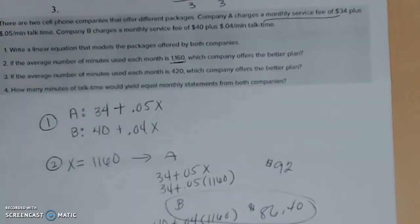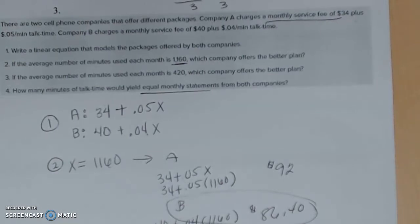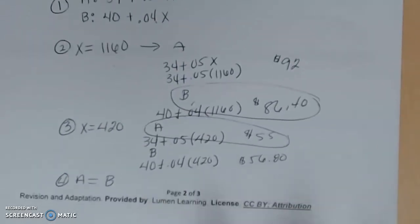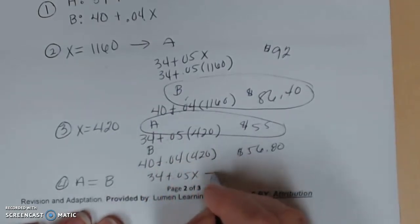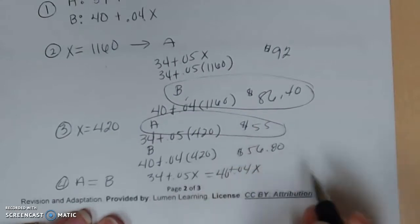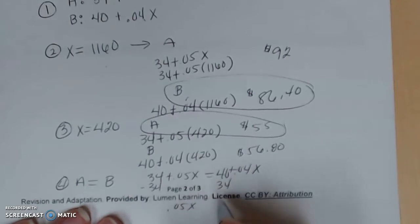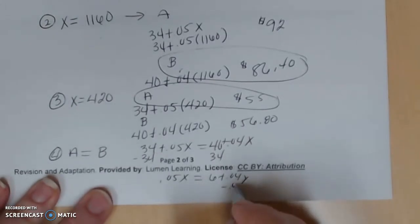Now number four says, how many minutes of talk time would yield equal monthly statements from both companies? So I want equal statements. So I'm going to take company A and set equal to B and figure out what X value is the exact same amount. We can see we talk a lot, we're going to go with B. We talk a little, we're going to talk with A. But really, where's that dividing point for this problem? And so I'm just going to set A, 34 + 0.05X equal to 40 + 0.04X. Set them equal so I can subtract 34. Getting in my boundaries here.